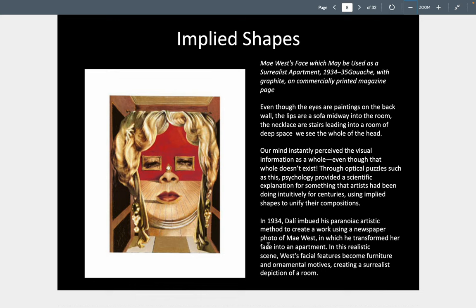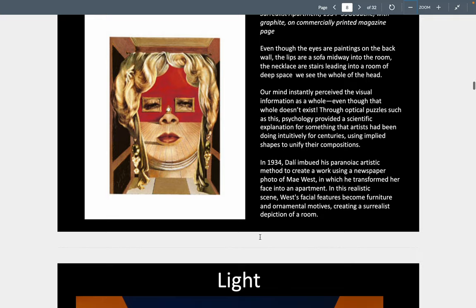We also have things called implied shapes — not always shapes that are drawn in, but might be implied. Salvador Dalí was a master at that. Here, Mae West's face — a film star from the 30s and 40s — he is making an apartment with steps, a wooden floor, a sofa made out of her lips, her nose houses an alarm clock, and in the back these are all oil derricks and oil fields. But from far away, they appear to be eyes, as if the wall is her wearing a mask. It looks remarkably like Mae West.